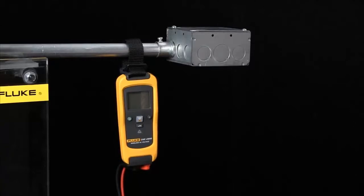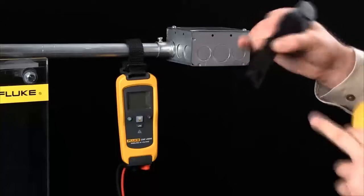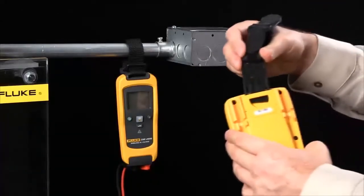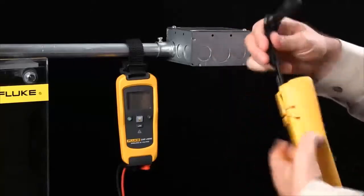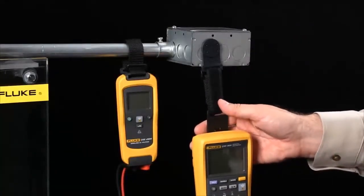Also recall that the TPAK system will work with any Fluke meter. We include this plastic piece with every single kit. Simply snap it into the back of any Fluke multimeter and now you have the ability to use hands-free operation.